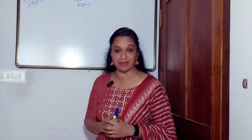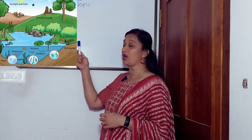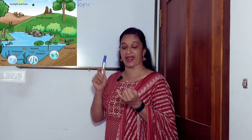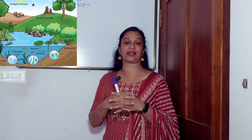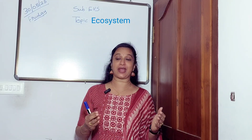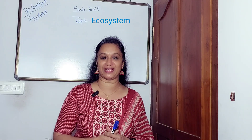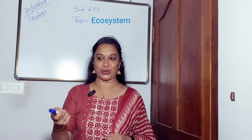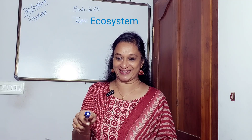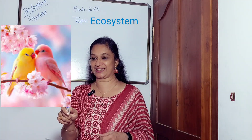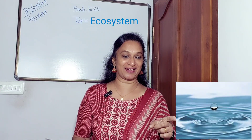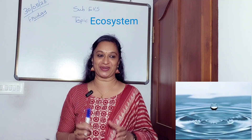An ecosystem is a place where all living things like plants and animals, and non-living things like water, air and soil, work together. Can you name some living things and non-living things around you? Yes — birds are living things, water is a non-living thing. Very good.